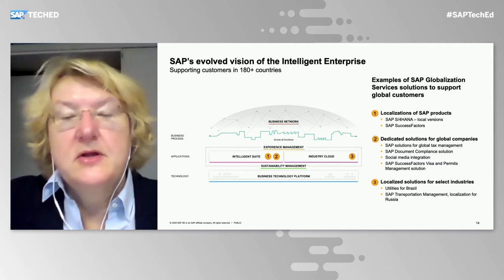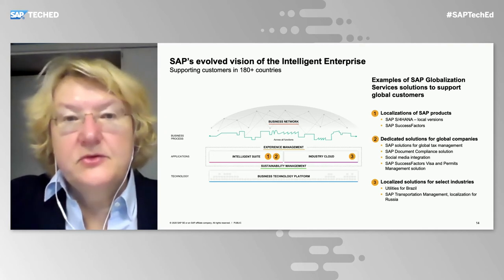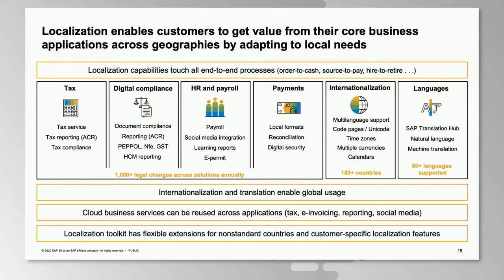We also have the industry dimension — for example, utilities for Brazil or transportation management for Russia, which are localized industry solutions for specific countries. Localization as a whole enables customers to get value from their core business applications across geographies by adapting to local needs. Areas we cover include tax, digital compliance, HR and payroll, and payments. On the internationalization side, we support multiple languages, time zones, currencies, calendars, and language availability through both natural language and machine translation.